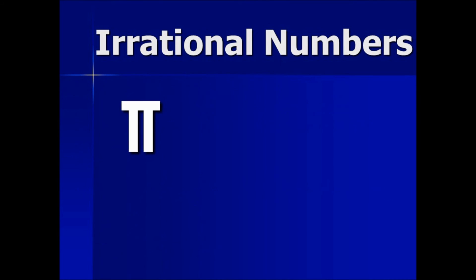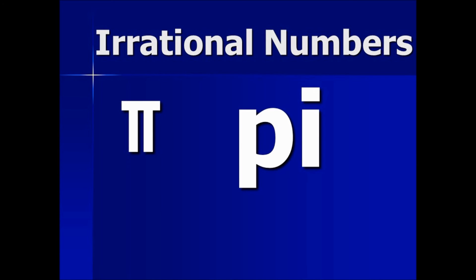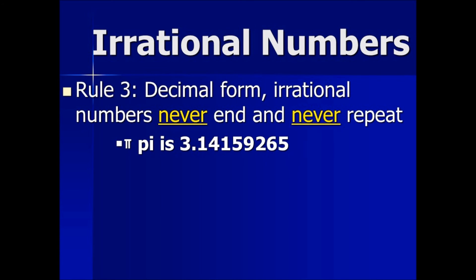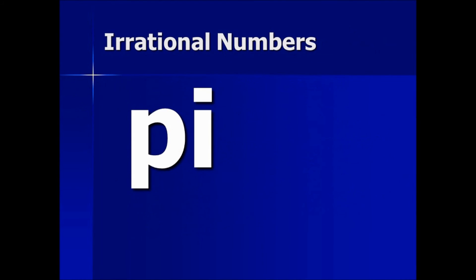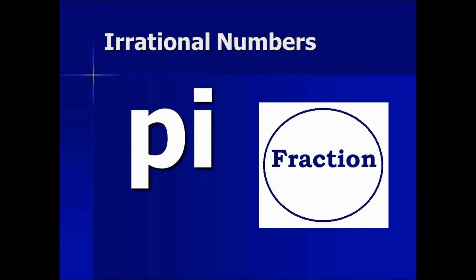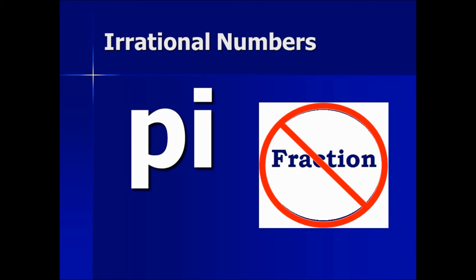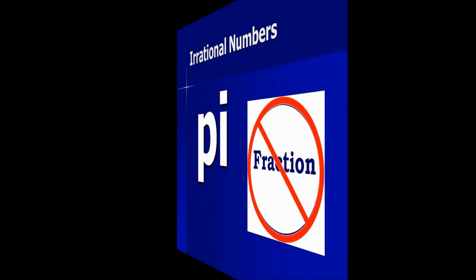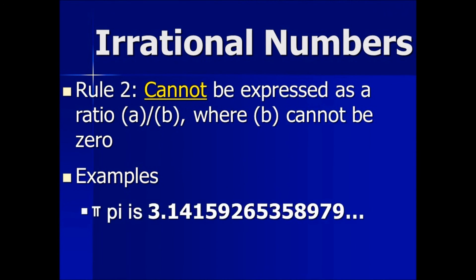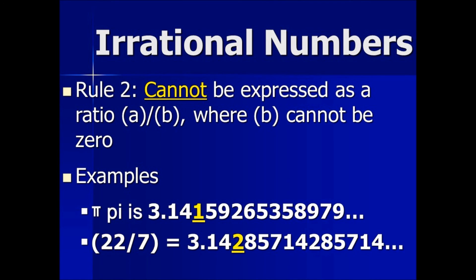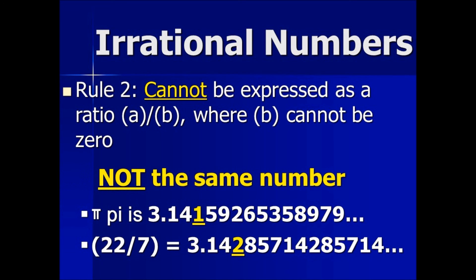You may be familiar with this symbol — it is called pi. Pi is an irrational number that is known to never end and never repeat. Now, some of you may have seen pi expressed as a fraction. By definition, irrational numbers cannot be expressed as a ratio or fraction. However, there is an approximation exception. Let's evaluate pi and its fraction form. Notice that in decimal form, they are not the same number.